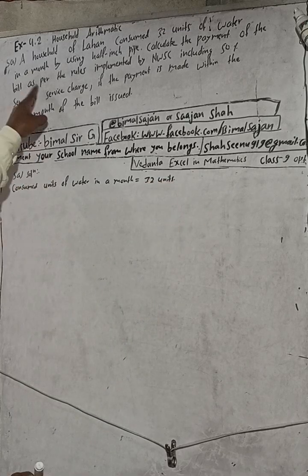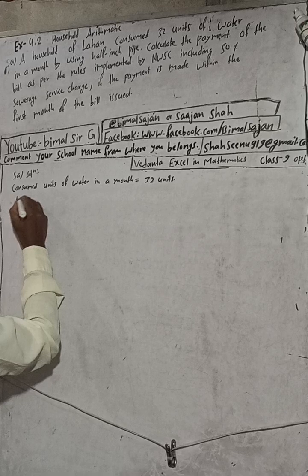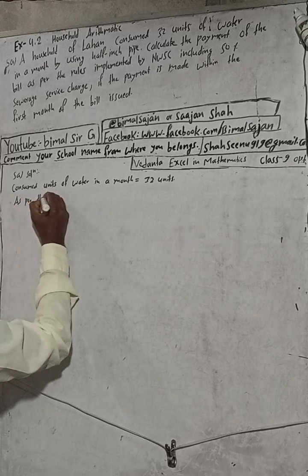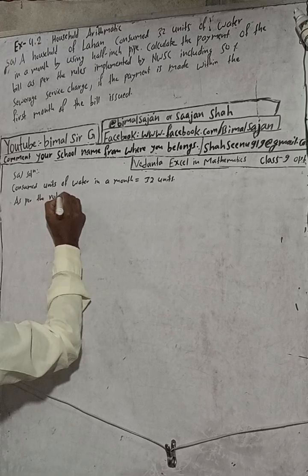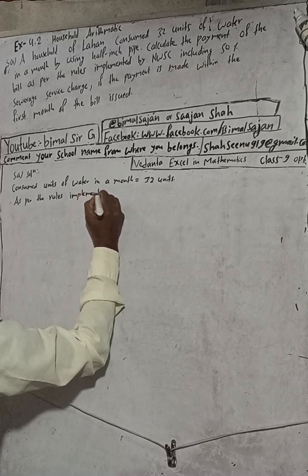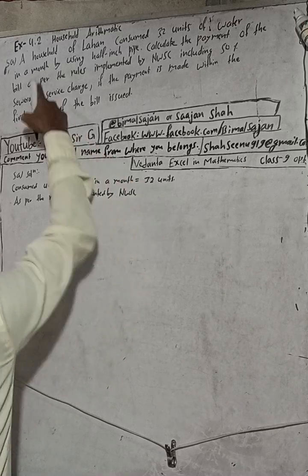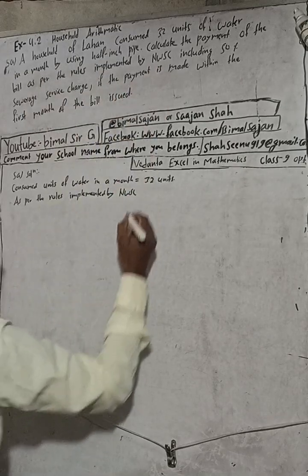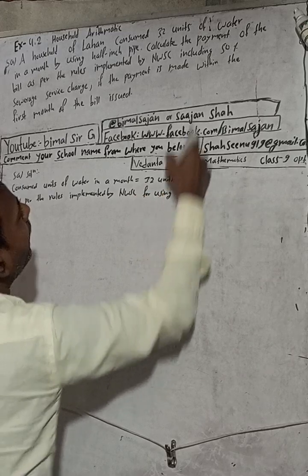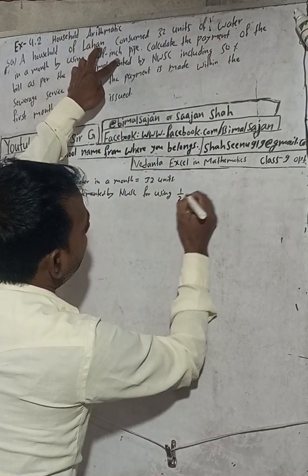Now, as per the rules implemented by NWSC, for using a half-inch pipe — the inch of the pipe is half inch pipe.